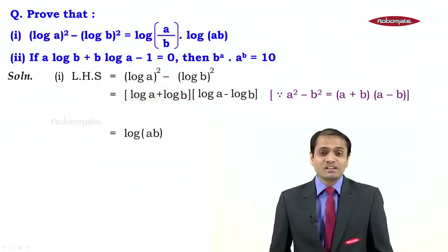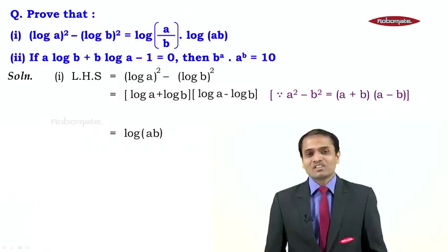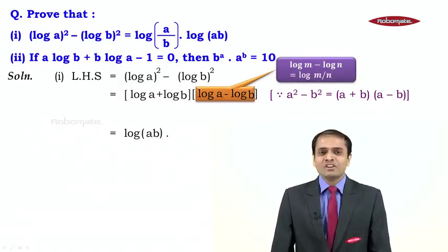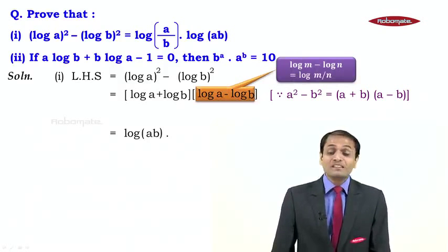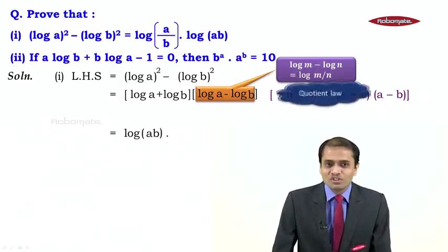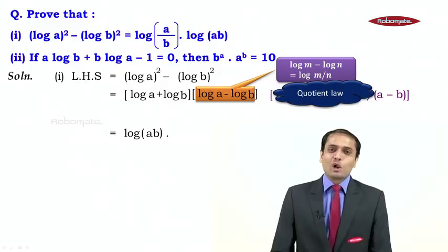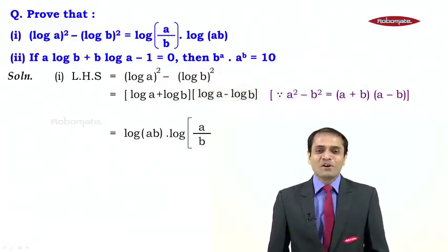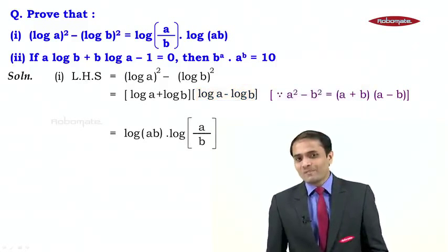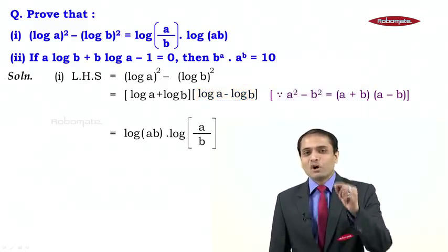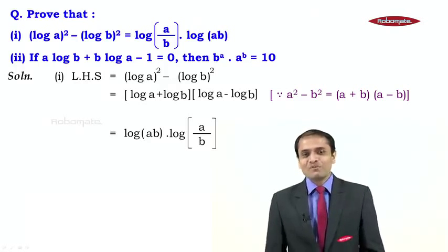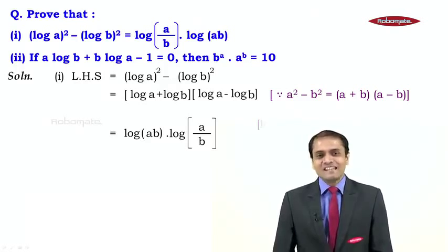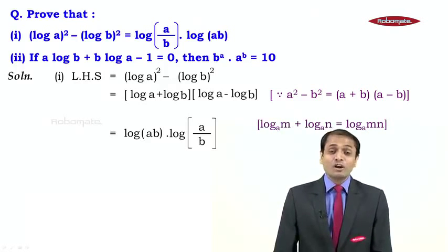Looking at the second bracket: we have log a minus log b — a minus sign between two logs — which reminds us of the quotient law. Applying the quotient law gives log(a/b). So now we have log(ab) times log(a/b), which is exactly our RHS.